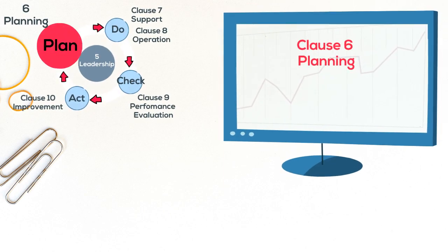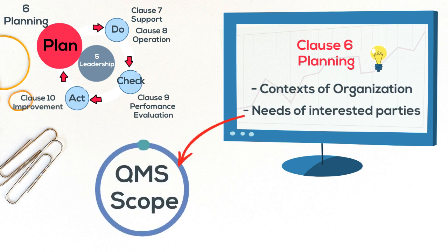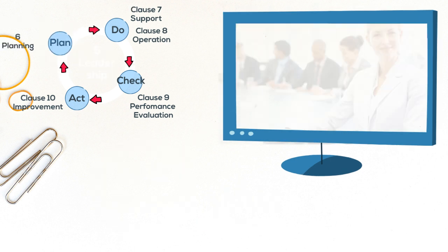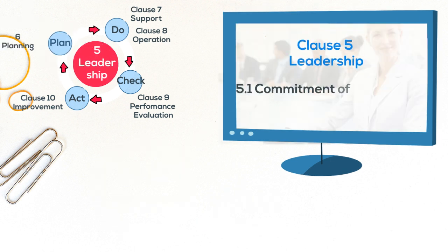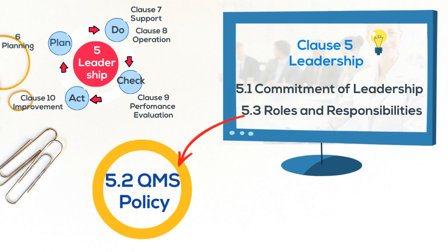It starts with understanding the context of the organization and the needs of interested parties in the QMS, which is used to define the scope of the QMS and its processes. This is followed by the commitment of leadership in the company to drive the organization to a customer focus by defining organizational roles and responsibilities and by establishing a quality policy to give the overall QMS a focus.